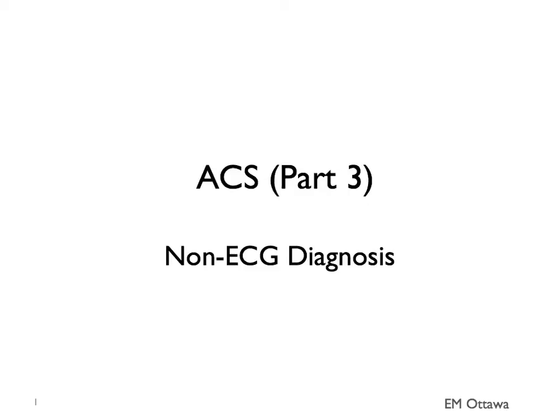Welcome back to part 3 of ACS. In this section, we'll talk about how to make the diagnosis using non-ECG modalities. They're separated into imaging and blood work. For imaging, we have chest x-ray, bedside ultrasound, and CT. Let's start with that.